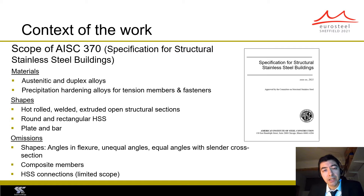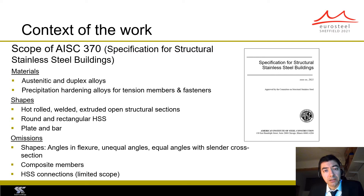AISC 370 gives design rules for austenitic and duplex stainless steel alloys; ferritic alloys are not covered. It also covers precipitation hardening alloys for tension members and fasteners. The design rules included in AISC 370 are more accurate and comprehensive than those originally included in the first edition of AISC Design Guide 27, partly due to the significant amount of research carried out on stainless steel between 2013 and now. In fact, the design rules are largely based on the same research conducted for the development of the second generation of the stainless steel Eurocode, and therefore the hard work of those who contributed to the stainless steel Eurocode is also reflected in the new AISC 370.